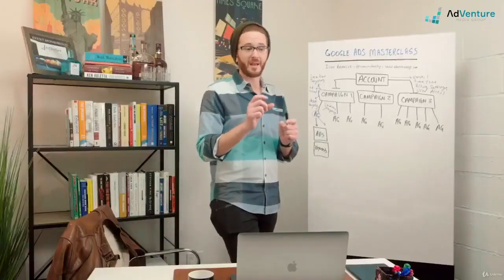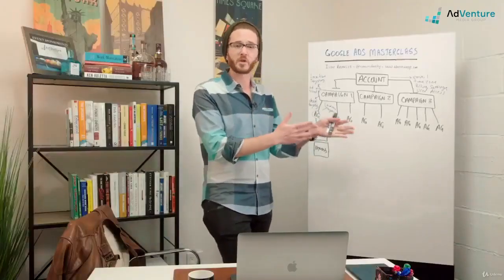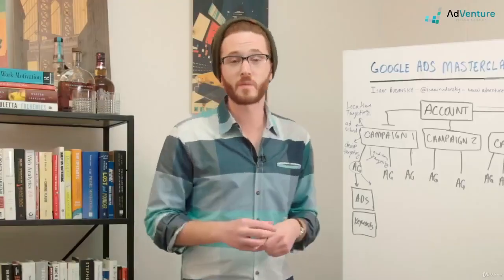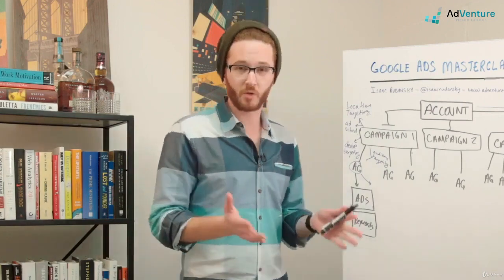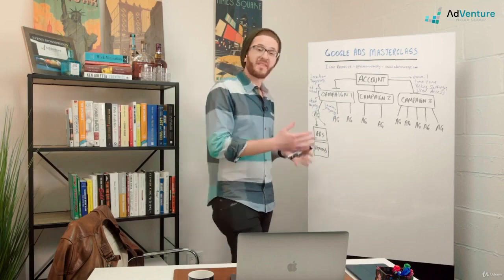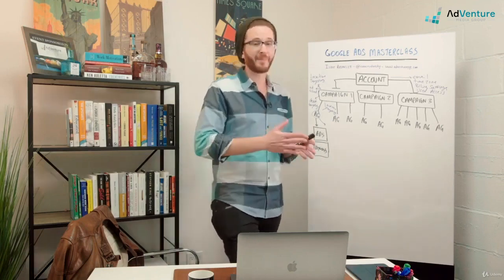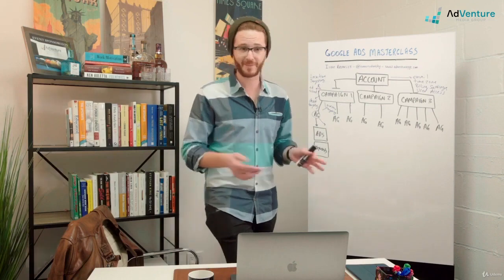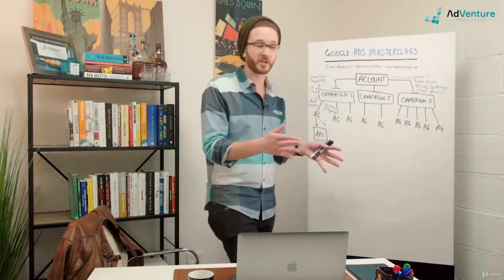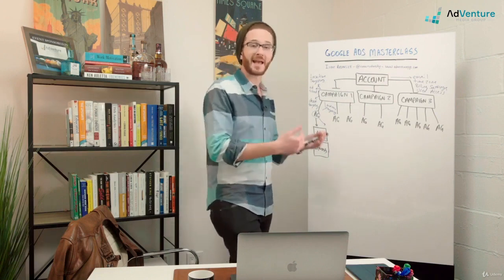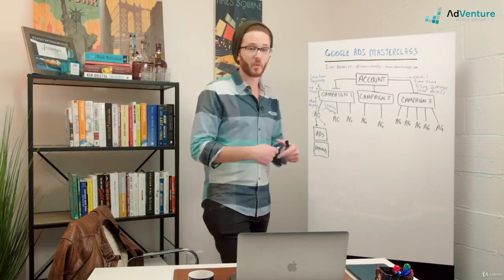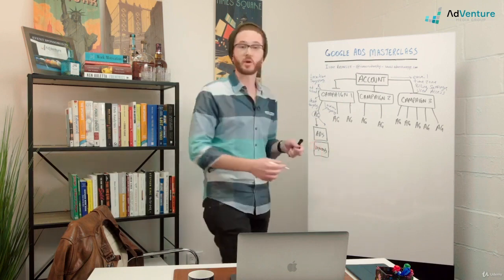Your keywords are sort of the mediator between an ad being shown or an ad being available to be shown and a search term. Search terms are what the user actually types into the Google search engine. Remember we spoke about that in the previous section. Google will then look to your keywords to see, and based on match type, we're going to spend quite a bit of time talking about keywords and match types. Google will see is this keyword eligible? Is it related enough to the search term? Does this account want to show an ad for the impression?